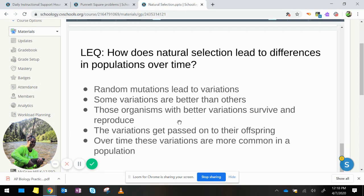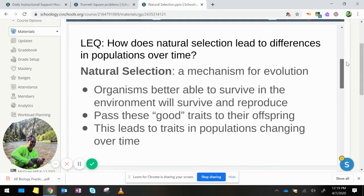Some variations are better than others, and organisms with better variations survive and reproduce in whatever specific environment they are in. These variations get passed on to their offspring, and over time these variations are more common in the population. So that was Lesson 1.